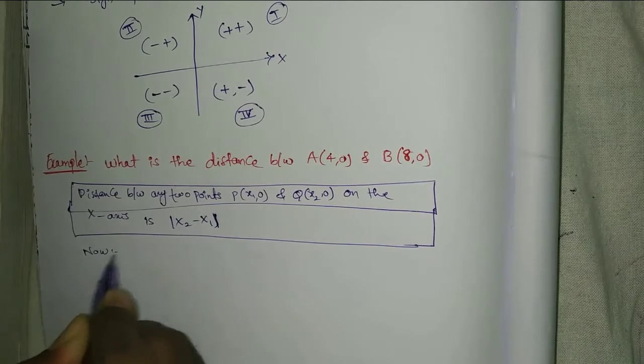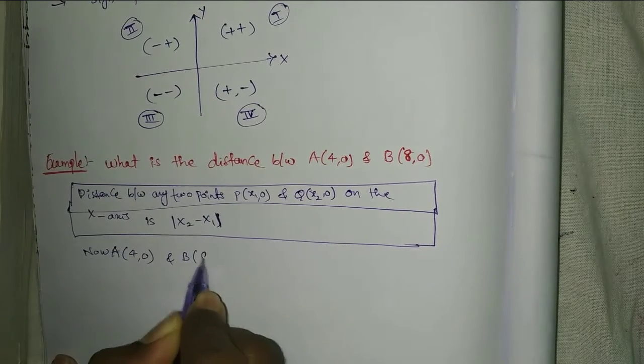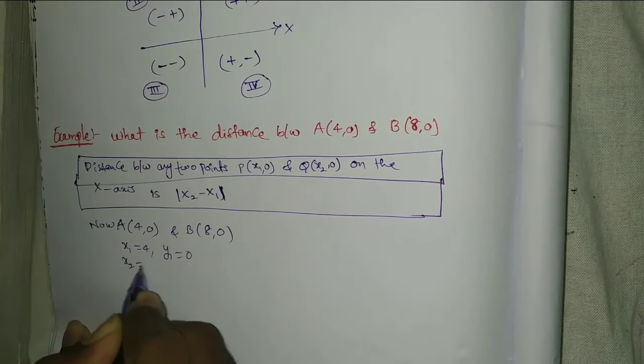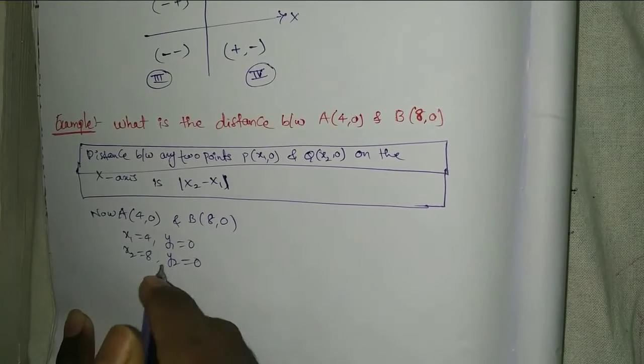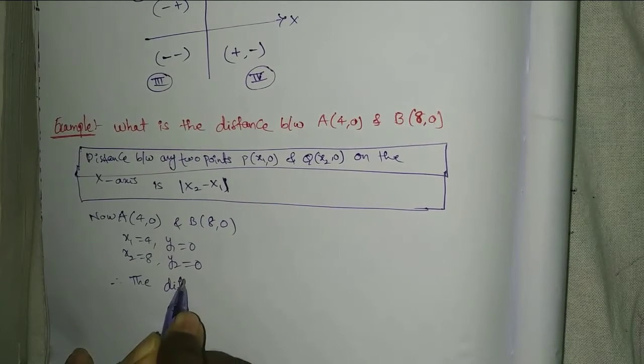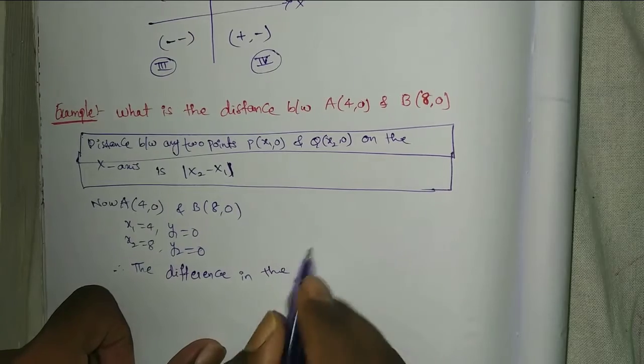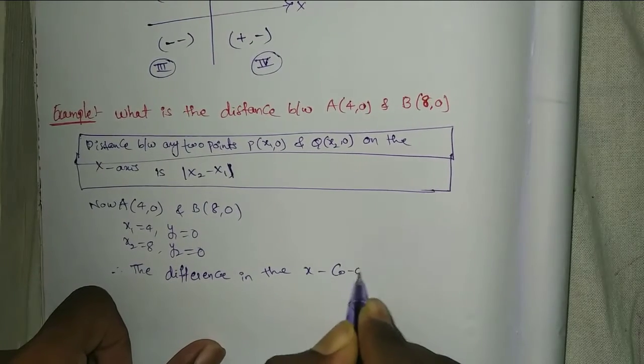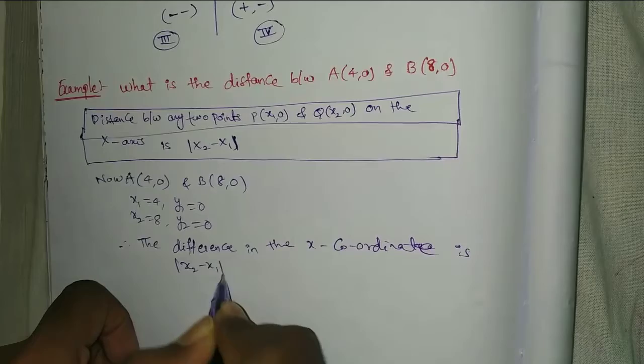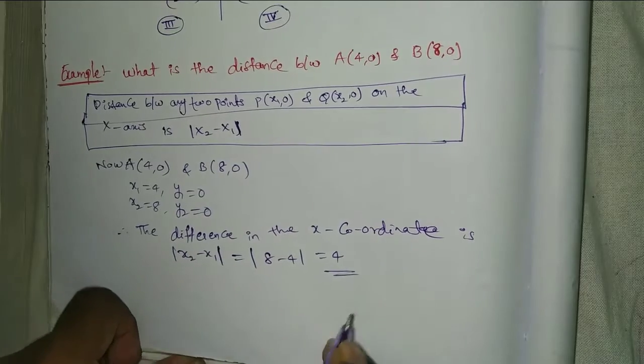Now solution. A point is (4, 0) and B point is (8, 0). So x1 = 4, y1 = 0, x2 = 8, y2 = 0. Therefore, the difference in the x-coordinate is |x2 - x1| = |8 - 4| = 4. This is the solution.